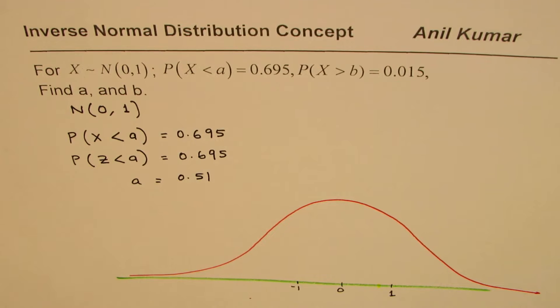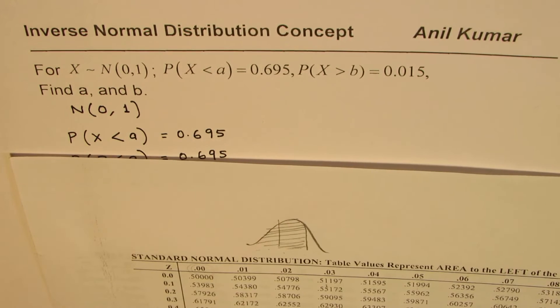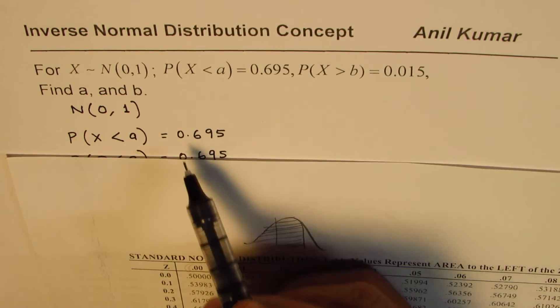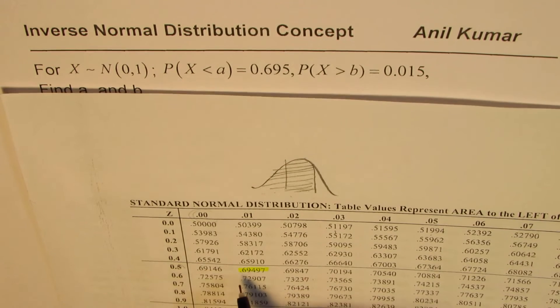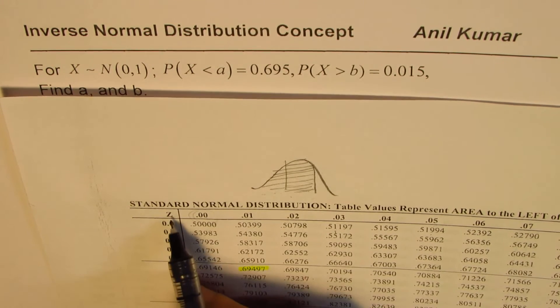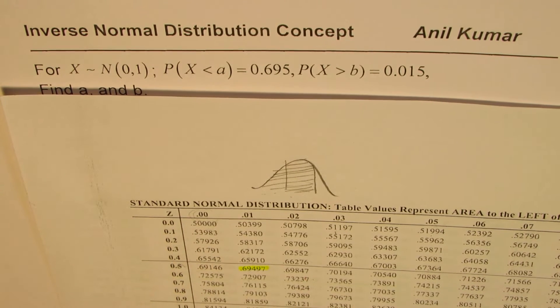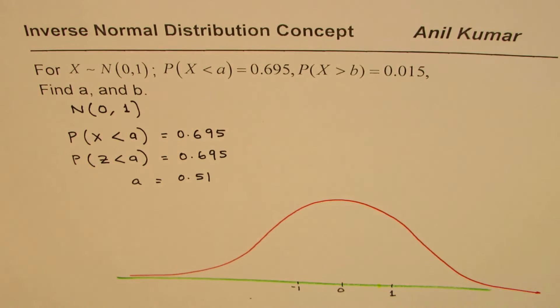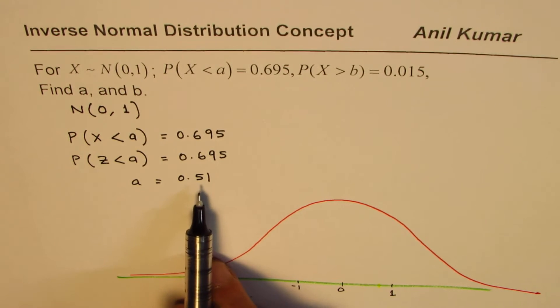So that is how we find the inverse reading from the table itself. 0.51. Let's look into it once again. We are saying that the probability is 0.69 to the left side, 0.695. So we can round this to 0.695. And on the z-score, we have 0.51. That is the z-score, 0.51. So we got a as 0.51.